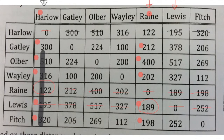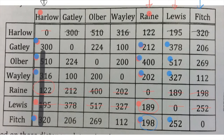We look down this column. That one's crossed out. What's the smallest number out of all the ones I've put a blue dot next to? 198. So we've now got Fitch — we've joined town Fitch to the network. We cross out all the other towns there.